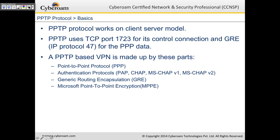The PPTP protocol is another way of connecting VPN in a client-to-site scenario. PPTP works on a client-server model, uses TCP port number 1723 for its control connection, and GRE IP protocol 47 for the PPP data. A PPTP VPN comprises PPP, authentication protocols like PAP, CHAP, MS-CHAP version 1 and version 2, as well as GRE and MPPE.